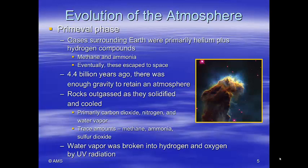This escape velocity depends on how strong the pull of gravity is. For example, the Moon has a much smaller gravitational force than the Earth does — it depends on the mass of the planet. So on the Moon, the escape velocity is a lot slower than it is on the Earth, and therefore it's easier for gas molecules to escape the Moon's surface. If the Moon had an atmosphere at some time, it may have escaped. At the beginning, there wasn't enough gravity on the Earth, and this atmosphere of helium and hydrogen escaped.